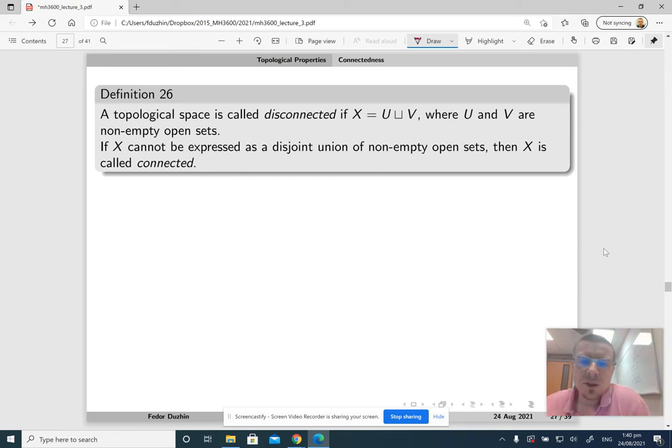There is one more notion similar to path connectedness, called just connectedness. A topological space is called disconnected if it can be represented as a disjoint union of two open sets.